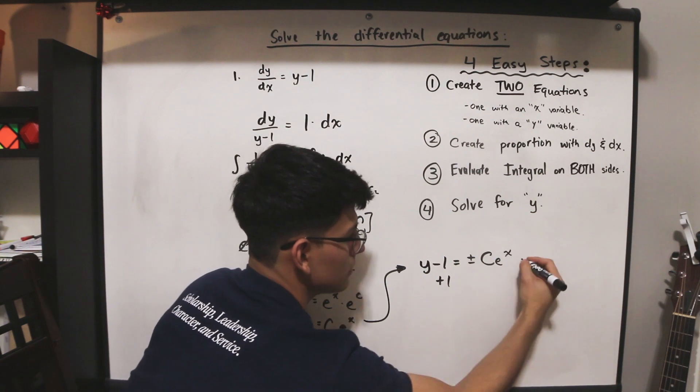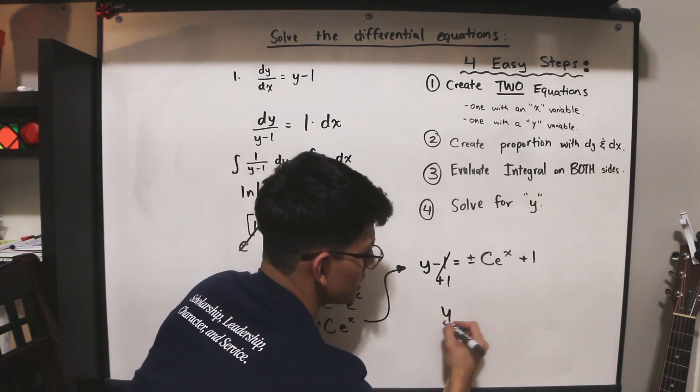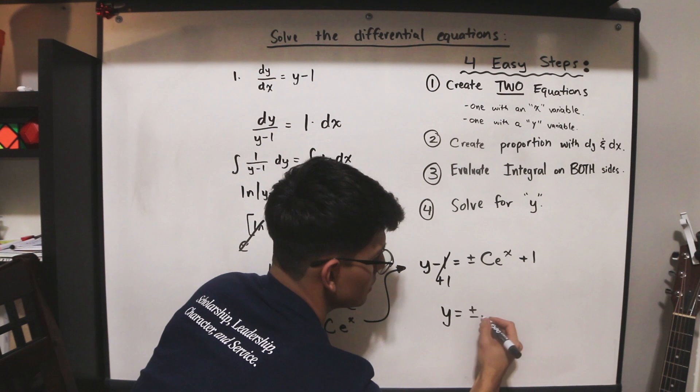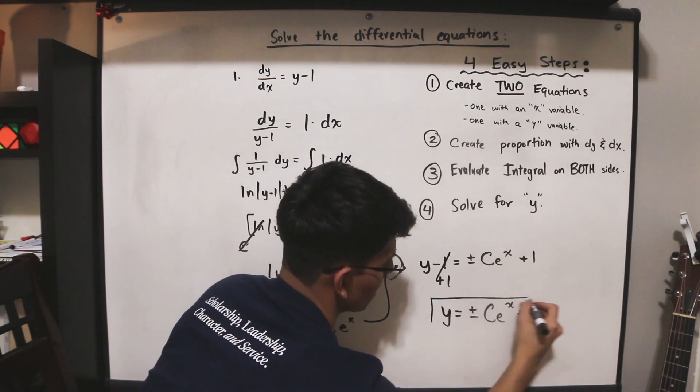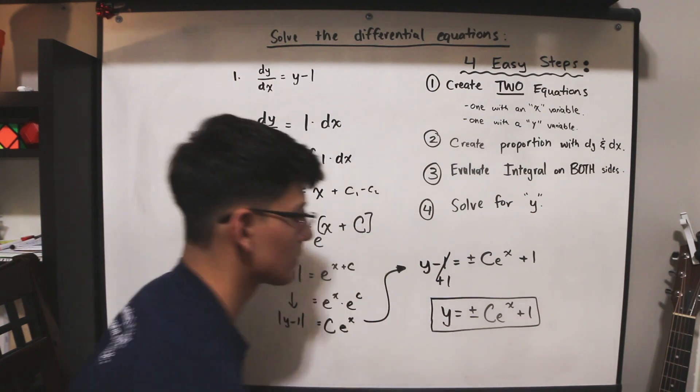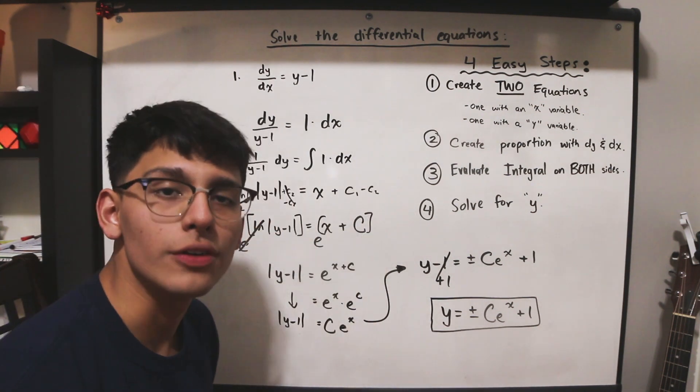Now we're going to add 1, just like we're solving regular algebra. And we have solved for y. So y is equal to plus or minus c e to the x plus 1. And that is our solution to our differential equation.